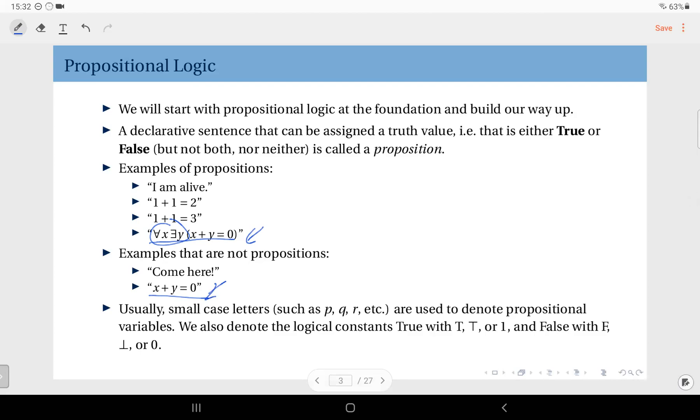To represent propositions, we usually use small case letters: p, q, r are the customary ones, but not necessarily. The truth values, true and false, are our constants, logical constants. Sometimes we represent true with a capital T, or sometimes with this symbol resembling a T, and sometimes by 1 in certain contexts, especially in electrical engineering. On the other hand, we have false. Sometimes we represent it with an F, and sometimes we represent it with this. Usually when you see this, you call it a contradiction. Essentially, this is the symbol that represents false, and sometimes we represent false with a 0.